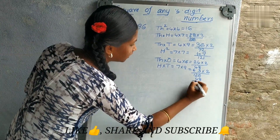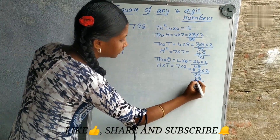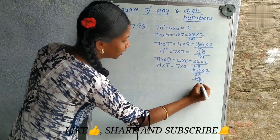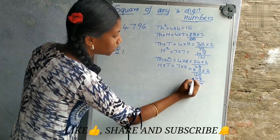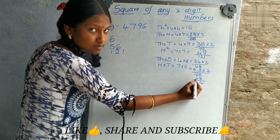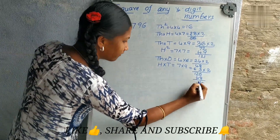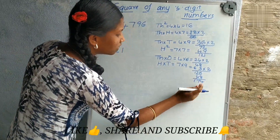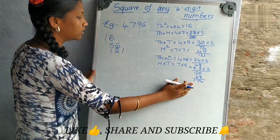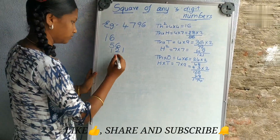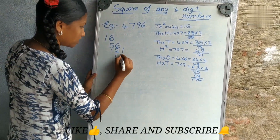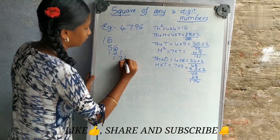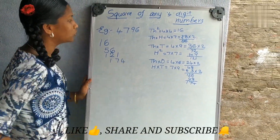Now we have to add these two numbers: 48 and 126. 6 plus 8 is 14, 2 plus 4 is 6 plus 1 is 7, and 1. Write this number here — 174.